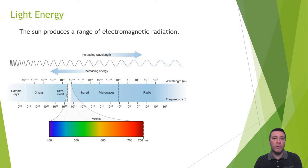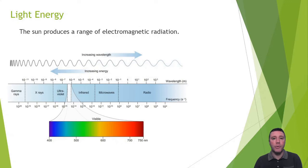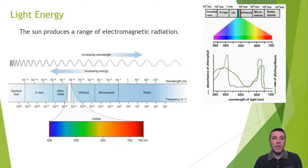Blues, purples, and violets exist in the shorter-wavelength, higher-energy region, while reds and oranges are found in the longer-wavelength, lower-energy portion. Collectively, all wavelengths of light combine to produce white light. It is this visible light that plants rely upon for photosynthesis.